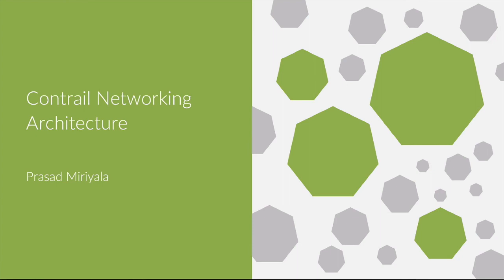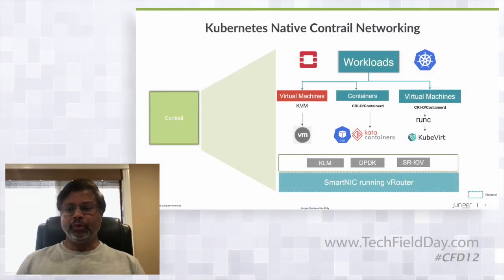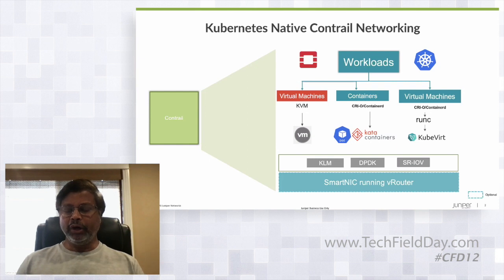Hi everybody. My name is Prasad. I'm going to walk through the Contrail networking architecture. Contrail supports both Kubernetes orchestrator as well as OpenStack orchestrators. When we have the Kubernetes orchestrator, we support containers as well as virtual machines via KubeVirt.